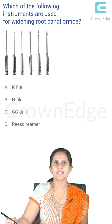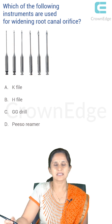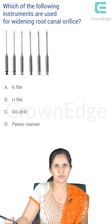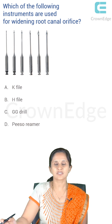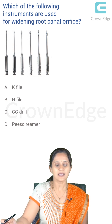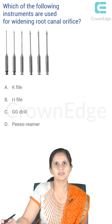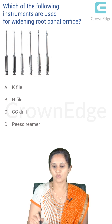Which of the following instruments are used for widening root canal orifice? K files are not used — K files are actually used for widening the pulp canals. H files are also used for widening pulp canals. Peeso reamer is used for removing gutta-percha post root canal treatment. So the answer is Gates Glidden drills — a straightforward question.